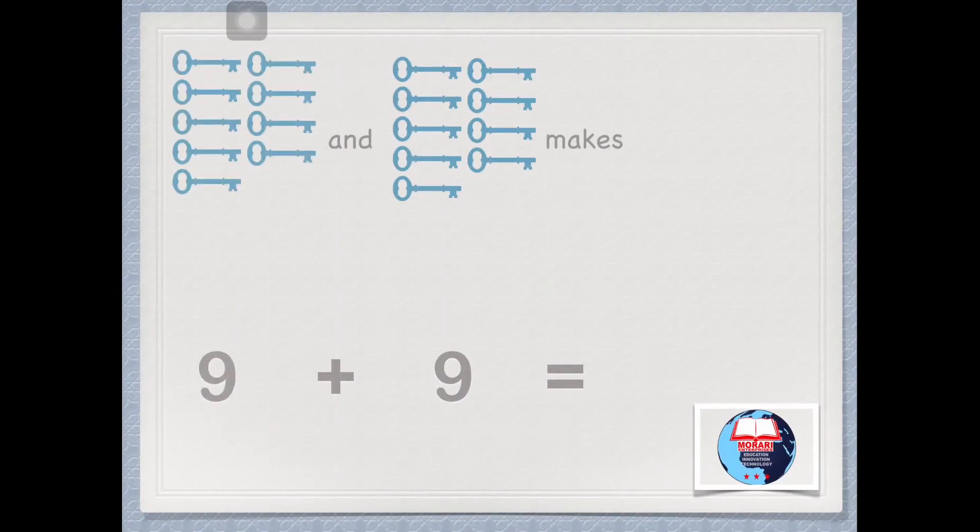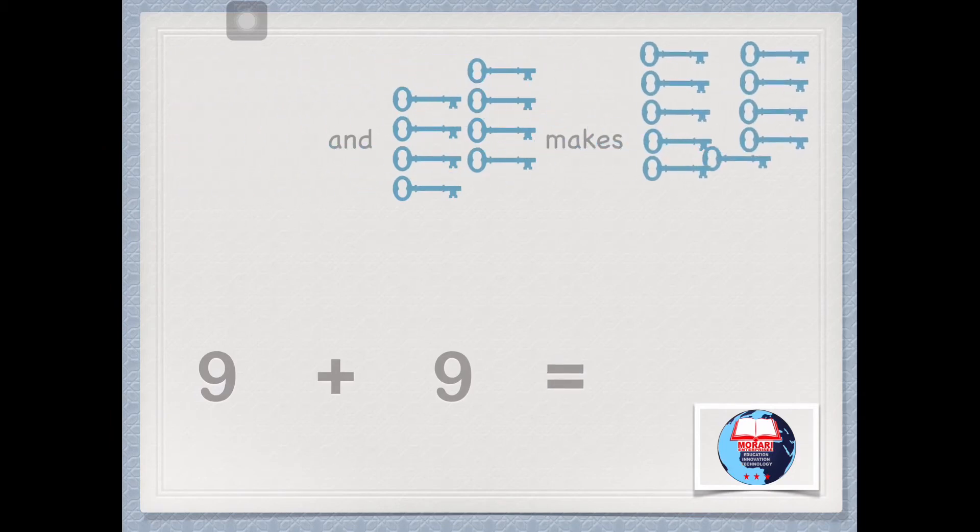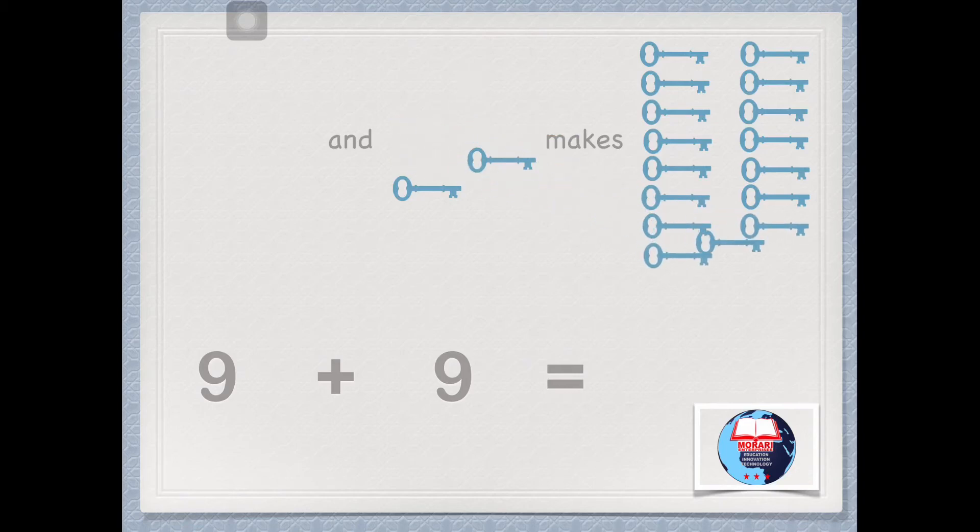9 and 9 makes 9, 10, 11, 12, 13, 14, 15, 16, 17 and 18.